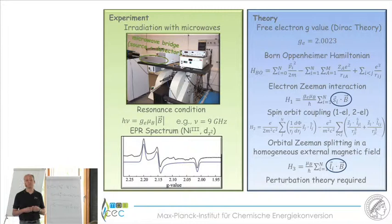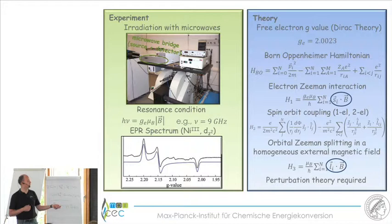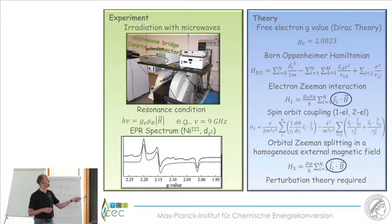If one measures on a transition metal complex, for example an Ni(CO)3 system, one sees three features in the EPR spectrum: an absorptive feature at g = 2.20, a first-derivative-like signal at g = 2.15, and an emissive signal close to g = 2.0, close to the free electron g-value. So it is certainly not the case that only the free electron g-value applies in molecules — something more is going on.